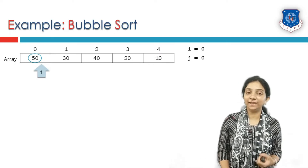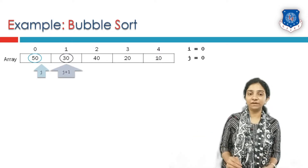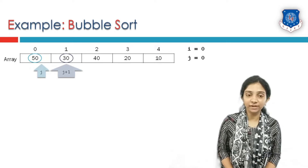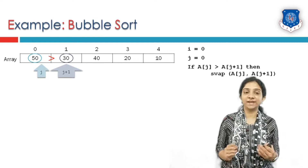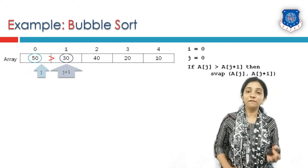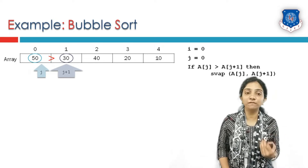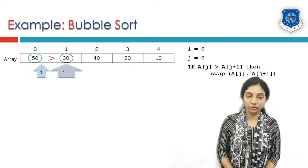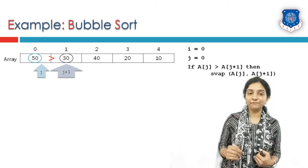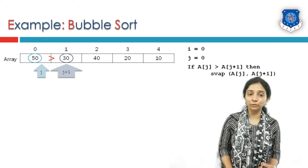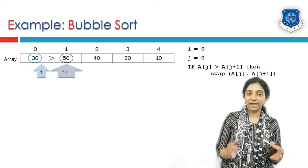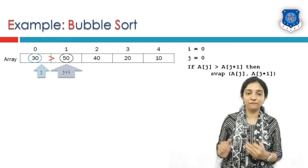The element at j is 50. The index j+1 points to the very next element, which is 30. These elements are compared: is a[j] greater than a[j+1]? If this condition holds true, we need to swap the elements. Since 50 is greater than 30, which is true, we swap 50 and 30. Hence 30 now comes before 50.